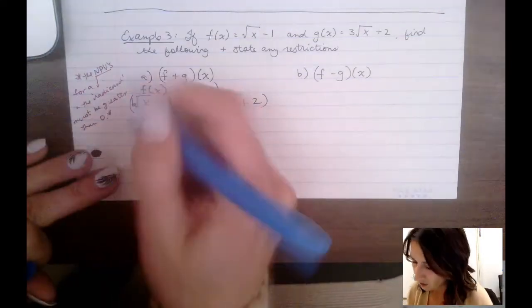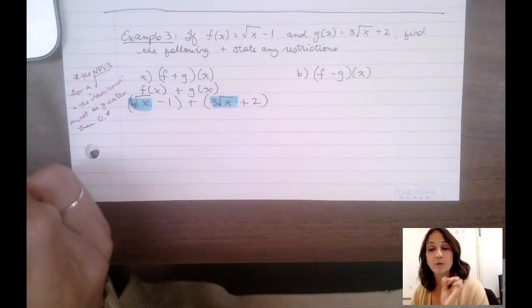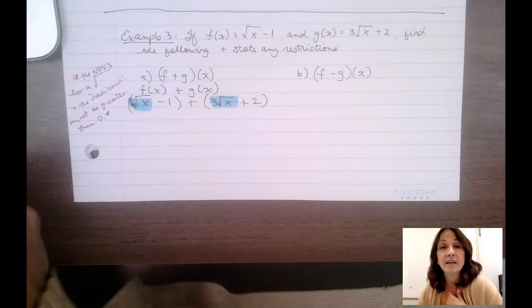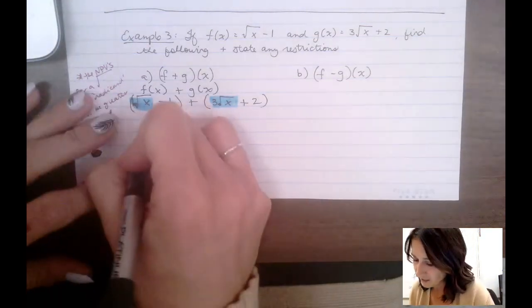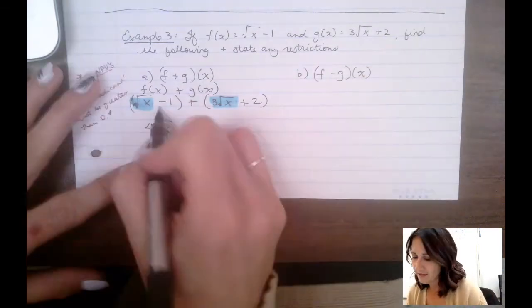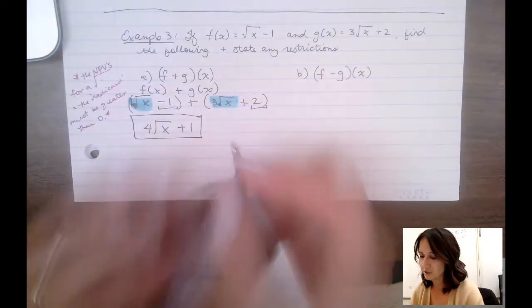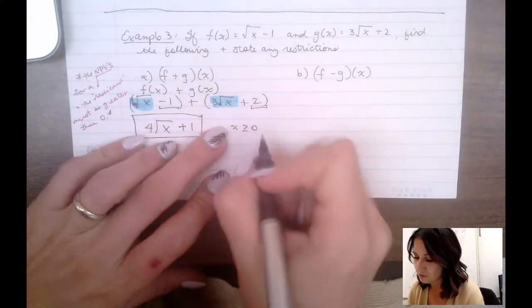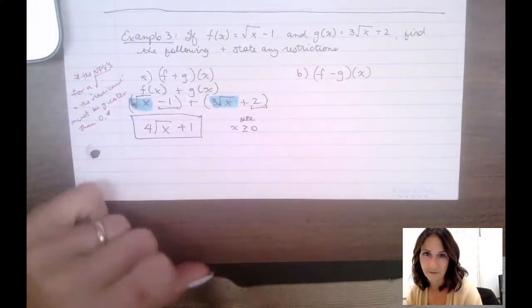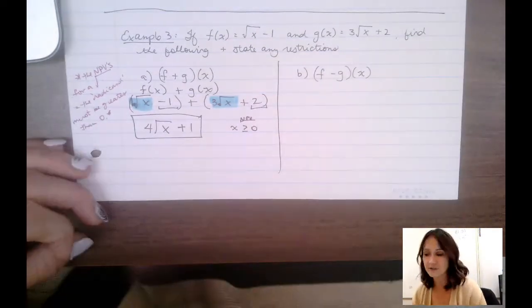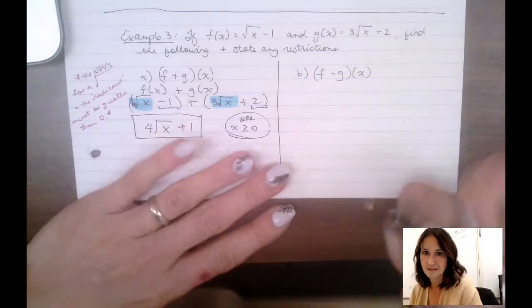So my like terms here are my one root x and my three root x. Remember when we're adding and subtracting, we were only counting. Counting means we are changing strictly the coefficient. So one root x plus three root x's is four root x's. And then negative one plus two gives me plus one. So there is my simplified expression, remembering that x has to be greater than or equal to zero because it cannot be a negative. So that's my NPV.